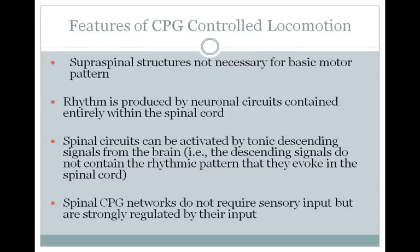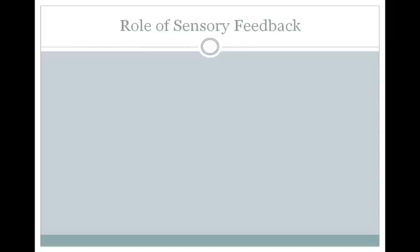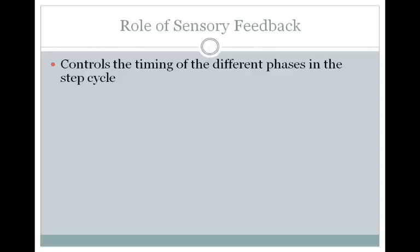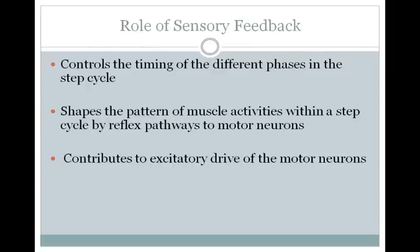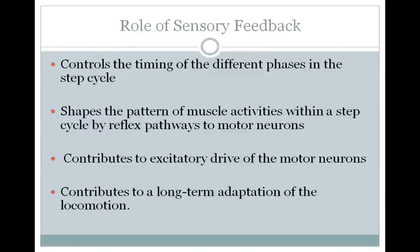Finally, spinal CPG networks don't require sensory input, but are strongly regulated by that input — sensory information from your proprioceptors can shape the locomotor behavior. While sensory feedback is not necessary for the locomotor pattern to be generated, as seen with the isolated spinal cord preparation, it does play a very important role in normal locomotion. Sensory feedback controls the timing of the different phases in the step cycle, shapes the pattern of muscle activities through reflex pathways, contributes to excitatory drive of motor neurons, and contributes to long-term adaptation of locomotion, especially in development — since you get better and better at your locomotor pattern as you get older.